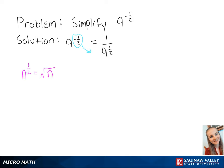Any number n raised to the half power is equal to the square root. This gives us 1 over the square root of 9, which is equal to 1 over 3. This is the final answer.